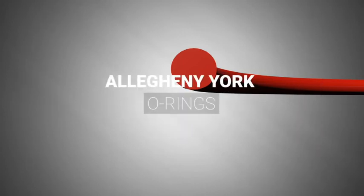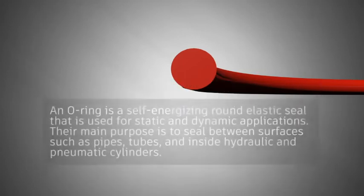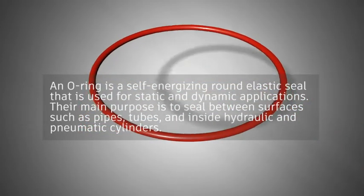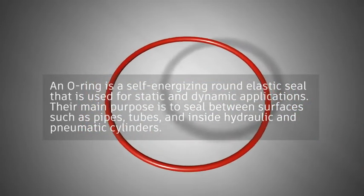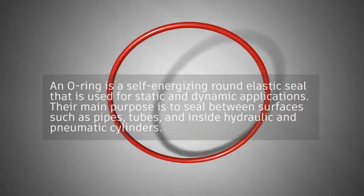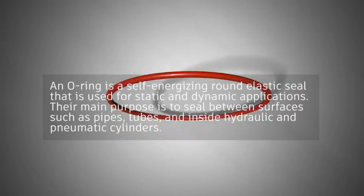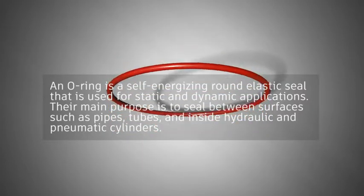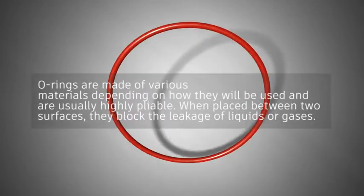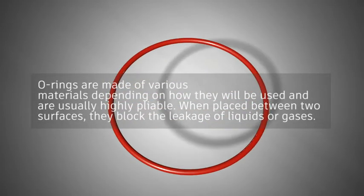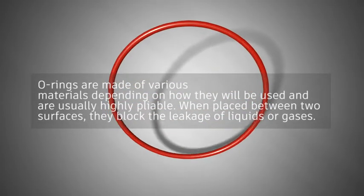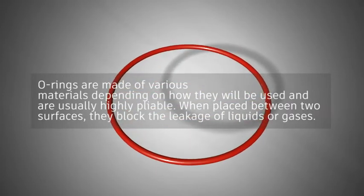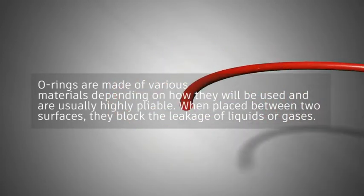Allegheny York O-Rings. An O-Ring is a self-energizing round elastic seal that is used for static and dynamic applications. Their main purpose is to seal between surfaces such as pipes, tubes, and inside hydraulic and pneumatic cylinders. O-Rings are made of various materials depending on how they will be used, and are usually highly pliable. When placed between two surfaces, they block the leakage of liquids or gases.